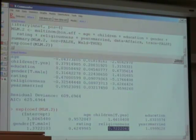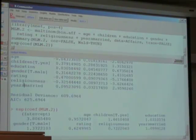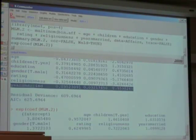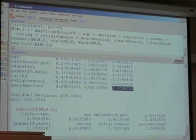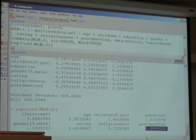And the coefficient for years married suggests that it's statistically significant, and it suggests that for an additional year in marriage you are 9% more likely to have an affair. Thank you very much.